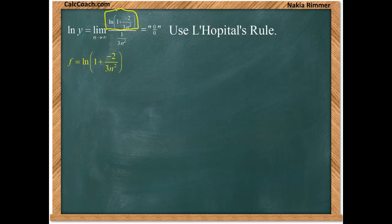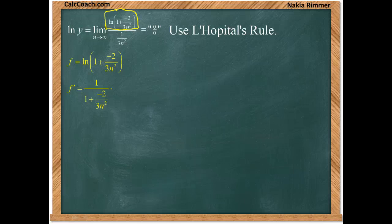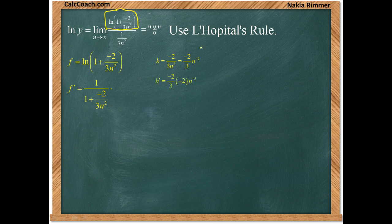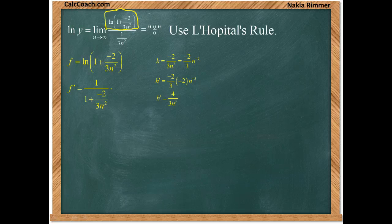The natural log of any function has one over that function as its derivative. But the chain rule says if that function is more than just the variable itself, we must multiply by the derivative of the inside function. The inside function is one plus negative two over three n squared — we focus on the negative two over three n squared term. Using the power rule, we bring the negative two down and decrease the exponent by one, leaving negative three as the new exponent. Multiplying the negative two thirds already there with negative two gives us four thirds times one over n cubed, or four over three n cubed as the derivative of the inside function. That finishes the numerator's derivative.